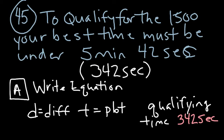Part A says, writing an equation. Write an equation that expresses D as the difference of the athlete's personal best time, which is T. That's PBT, personal best time, in seconds. And the qualifying time in seconds.